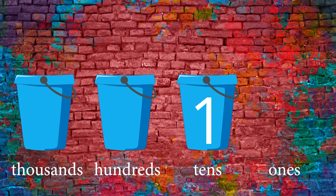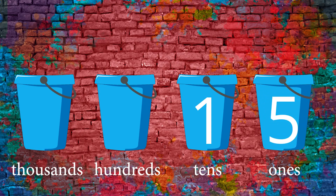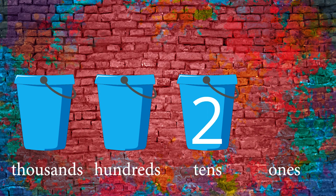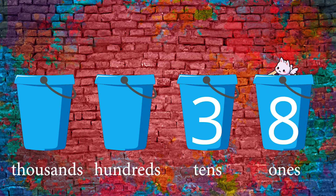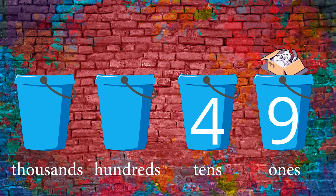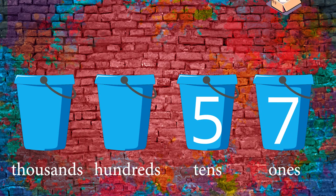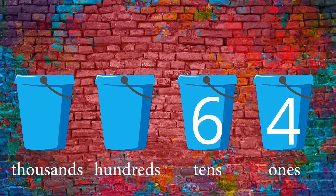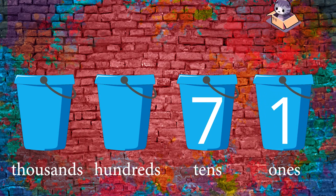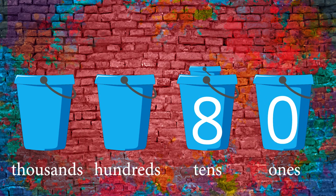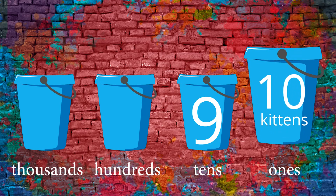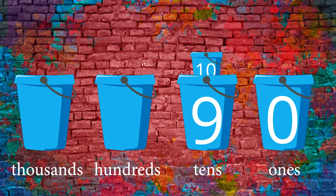Now we can start over with a new ones bucket until it overflows with ten kittens too. Now we have two groups of kittens in the tens bucket. When we've counted ten more kittens, we can put that group in the tens bucket too. That's why it's called the tens place value — because it keeps track of how many groups of ten we have. We can keep filling up the ones bucket and moving our groups of kittens over to the tens bucket until, uh oh, now our tens bucket is full.